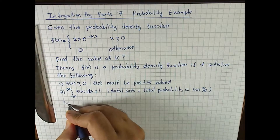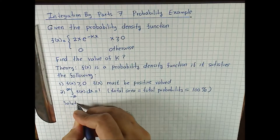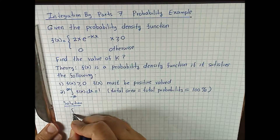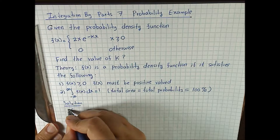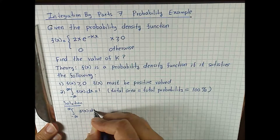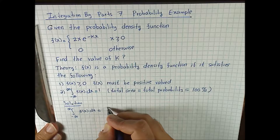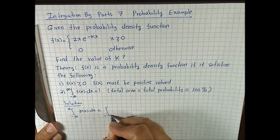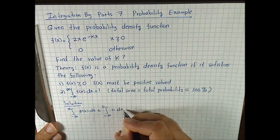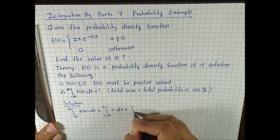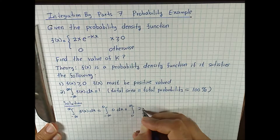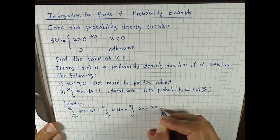Let's solve this. The integral from minus infinity to infinity of f of x dx equals the integral from minus infinity to 0 of 0 dx, plus the integral from 0 to infinity of 2x e to the negative kx dx.